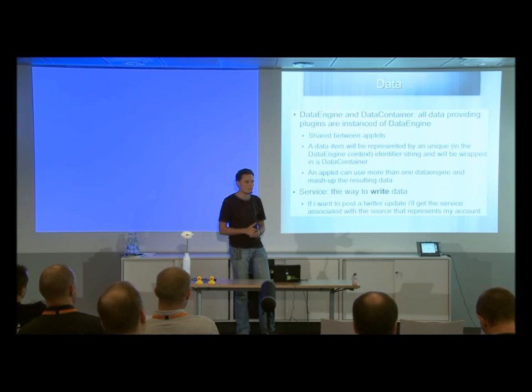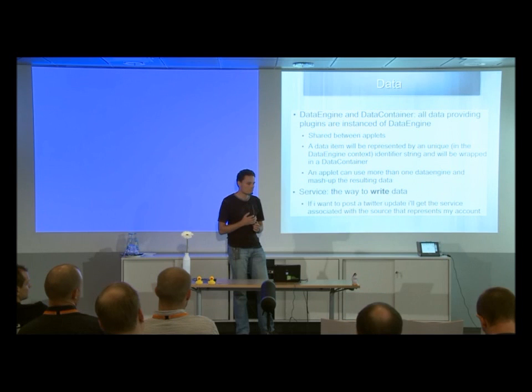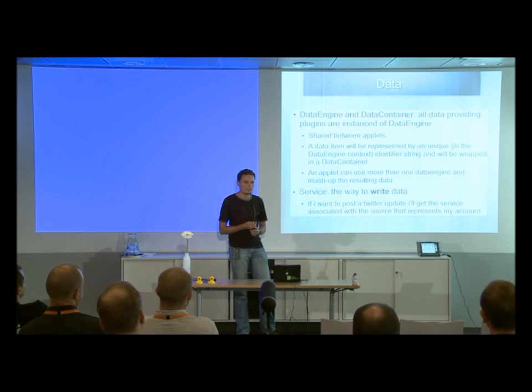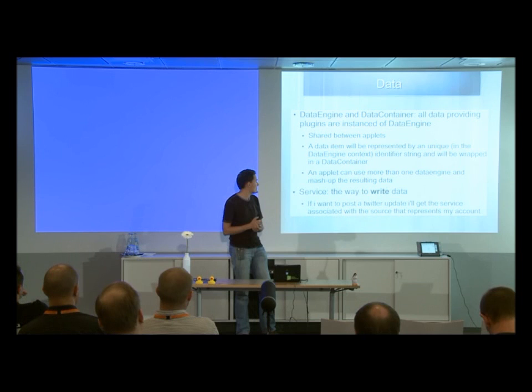The main class for data management is the DataEngine. Once it has been instantiated, a client can connect to one of its sources. A source is a string that is unique within the context of the data engine and identifies a particular piece of data. For instance, a microblog data engine could have a source string specifying that it's Twitter or Identi.ca with a given username, uniquely identifying what to fetch.